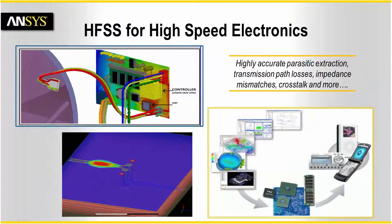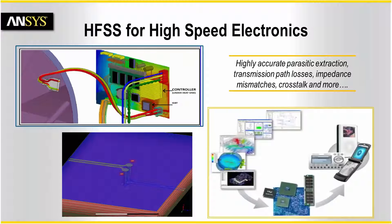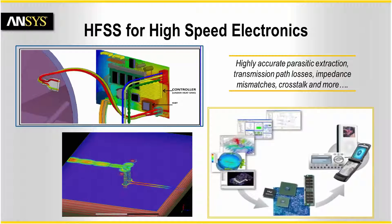For high-speed electronics, HFSS provides highly accurate parasitic extraction for signal integrity, power integrity, electromagnetic susceptibility, and EMI. It has an embedded linear circuit simulator that allows you to combine results from multiple analyses, delivering high accuracy of electromagnetics with the speed and capacity of circuit simulation. High-speed memory and SerDes channels are easily analyzed by cascading transmission lines, connectors, printed circuit boards, sockets, and IC package interconnects.